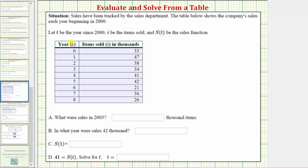So looking at the table, the first column gives the value of t, which should be considered the function input. And the second column gives us the items sold in thousands, which should be the function value, s of t, or the function output.